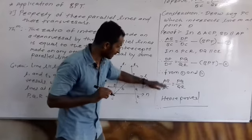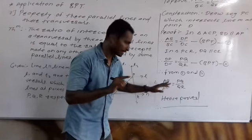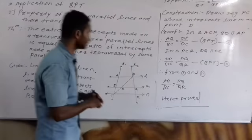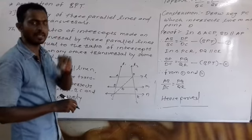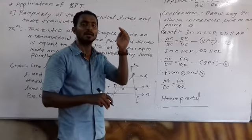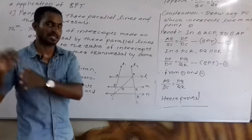Hence, we have proved that the ratio of the intercepts made on any one transversal of three parallel lines is equal to the ratio of the intercepts made by the same parallel lines on any other transversal.